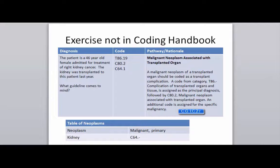So the guideline has already given us two codes that we know we have to use: the T86 category and the C80.2 code, and tells us we need to look up whatever malignancy she has. She has kidney cancer. We look up under our table of neoplasms, malignant primary column — it's the kidney with a C64-, meaning we're going to have additional characters to identify her as having the right kidney. The right is character one in this code, so the final code is C64.1.